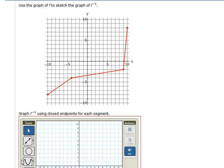So notice that the original endpoints are at negative 10, negative 8, negative 4, negative 4, 9, negative 2, and 10, 8.